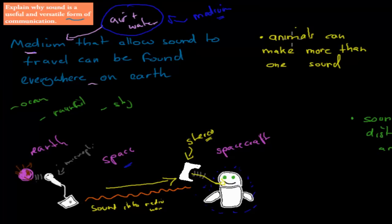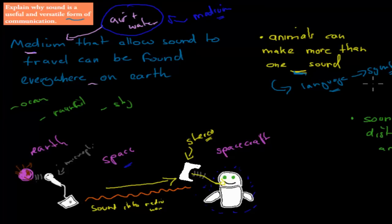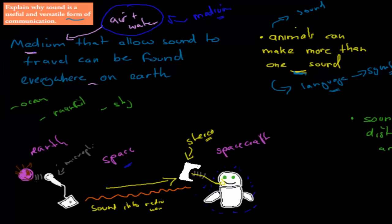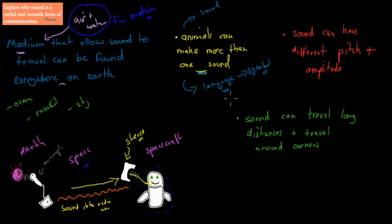Another reason sound is a useful form of communication is that animals can make more than one sound. Humans have language, which gives us huge amounts of different types of sounds that form symbols, allowing us to communicate. Even other animals without language can use different sounds for different meanings — one sound for danger, another for greeting — so each sound can carry a different message.